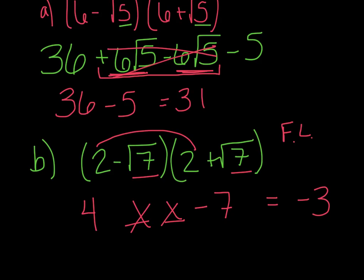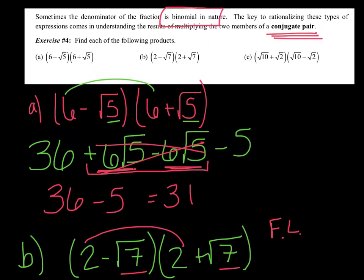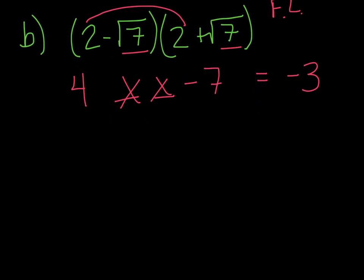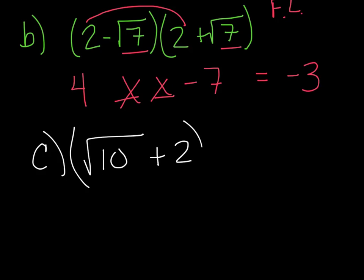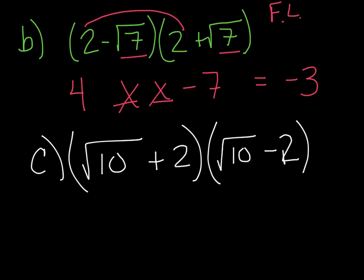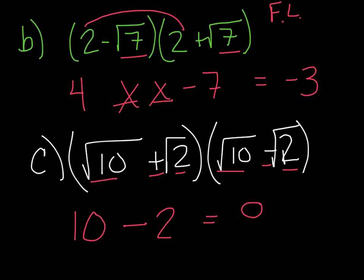If you can't remember that the middle terms cancel, just FOIL them all out. Letter C: (√10 + √2) and its conjugate (√10 − √2). So the conjugate of radical 10 plus radical 2 is radical 10 minus radical 2. Radical 10 times radical 10 is just 10. They're conjugates, so the middle terms cancel. A positive times a negative gets me a negative, and radical 2 times radical 2 is 2, so I get a total of 8.